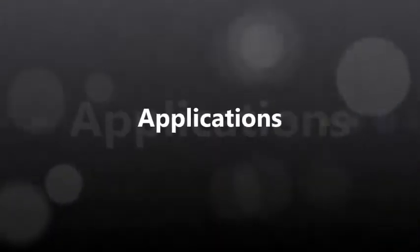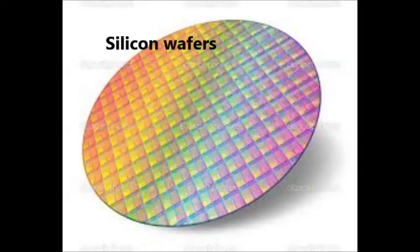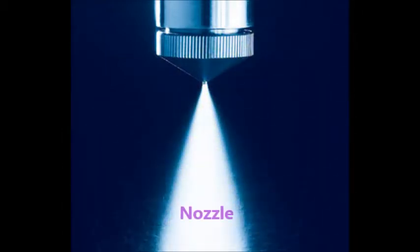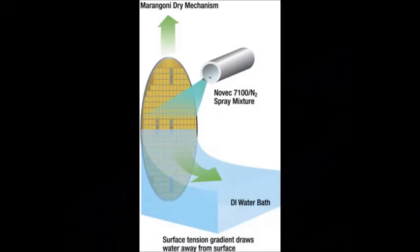Application of Marangoni effect involves fields in chemical engineering. One important application is the drying of silicon wafers after a wet processing step. An alcohol vapor or organic compound is blown through a nozzle over the wet surface. This will lead to a surface tension gradient which allows the liquid to be pulled off completely from water surface.